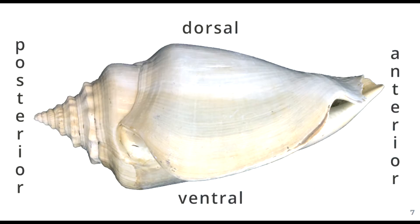Before knowing the morphology we should know about the correct sides of the organism. The upper part is known as the posterior part. The back part is called dorsal and the front one is known as ventral, and then comes the anterior part. The organism's mouth is always at the anterior part.